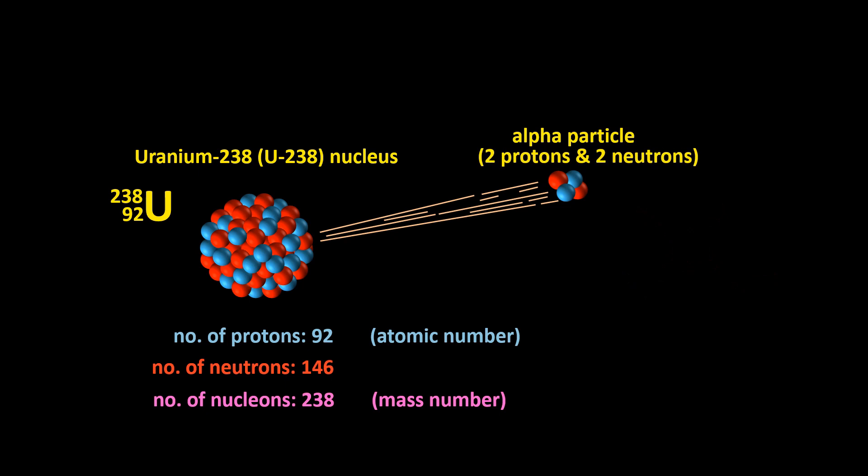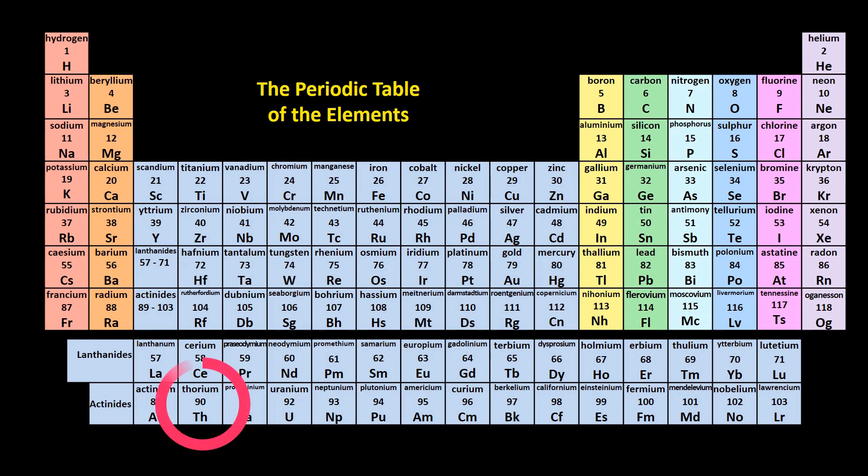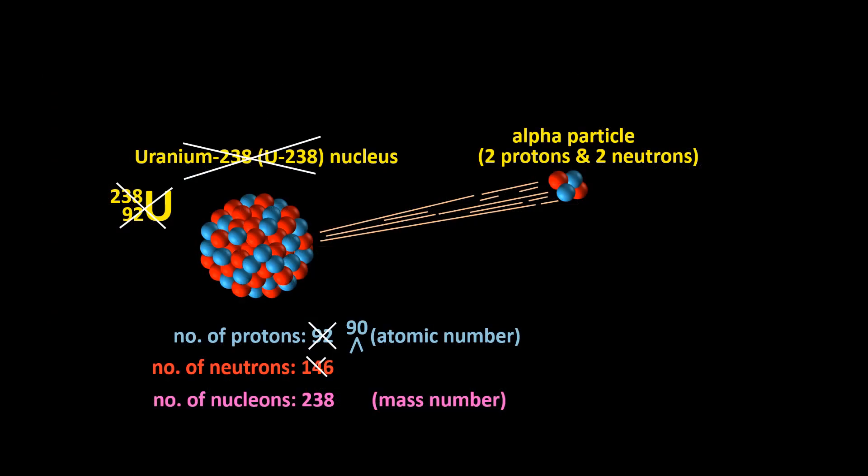The uranium atom is no longer a uranium atom. It has lost two protons, so it only has 90 protons left, which, if you consult a periodic table, makes it a thorium atom. It has also lost two neutrons, leaving it with 144 neutrons. Since it has lost a total of four nucleons—two protons and two neutrons—the number of nucleons it now has is only 234.